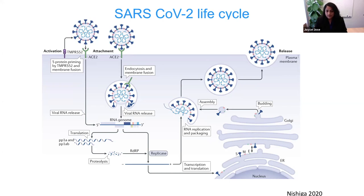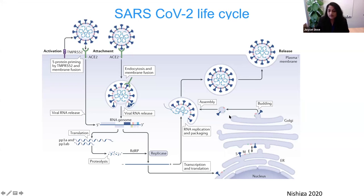After replication, the virus makes mRNAs for the structural proteins S, M, N, and E. These go through the secretory pathway of the cell — S, M, and E go through the ER, then the ER-Golgi intermediate compartment, or ERGIC. In the ERGIC, the N protein from the cytoplasm packages the genomic RNA using a packaging signal. The assembled virus then buds into the ERGIC compartment, travels through the Golgi pathway, and is released by exocytosis at the cell surface.